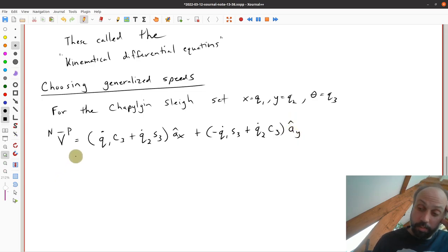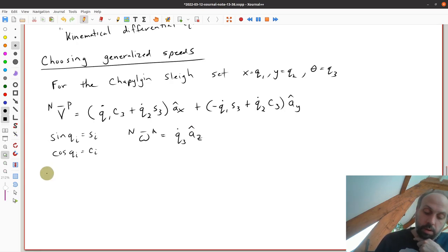Okay. And I'm using the shorthand notation here that the sine of qi is going to be si, and the cosine of qi would be ci. And then we also have omega of a and n equals q3 dot az. All right. So two velocity terms there. So we're going to make first a choice in generalized speeds. And there are an infinite number of choices that you could make theoretically.